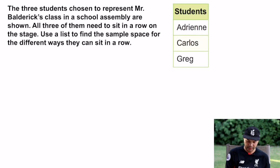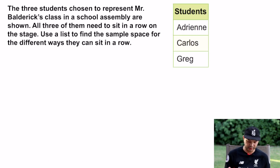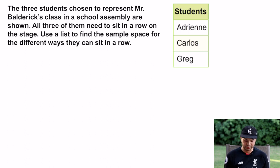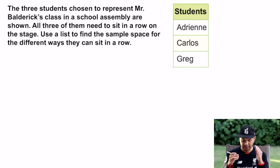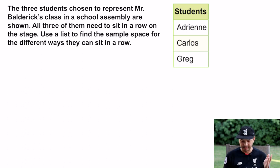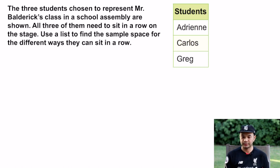Let's check out this example. It says three students chosen to represent Mr. Baldrick's class in a school assembly all need to sit in a row on the stage. Use a list to find the sample space for the different ways they can sit in the row. One way to do this is to put a list down and assign a letter for each person.